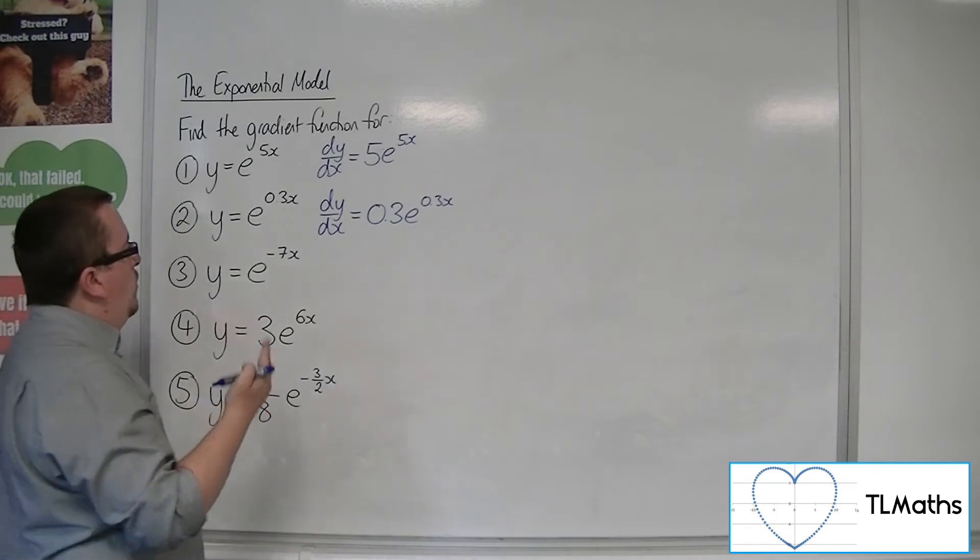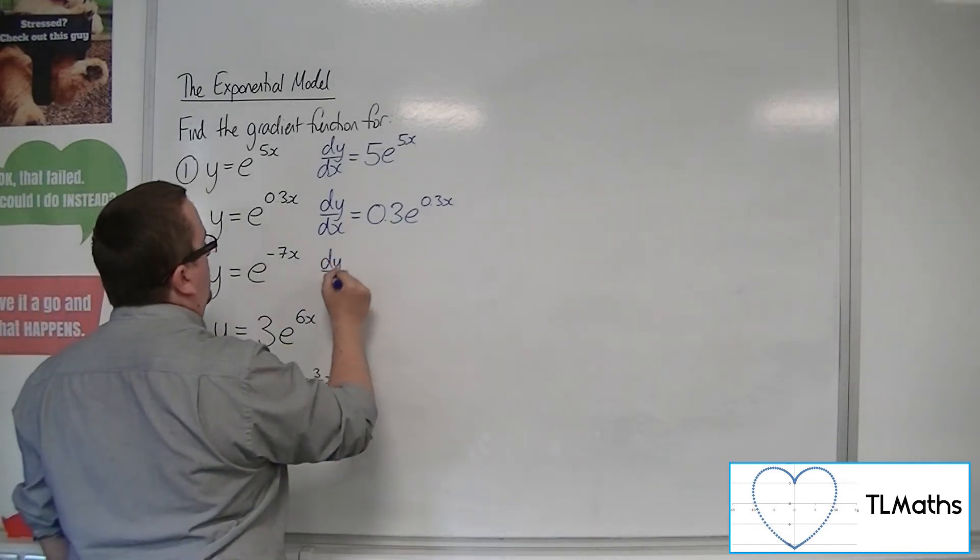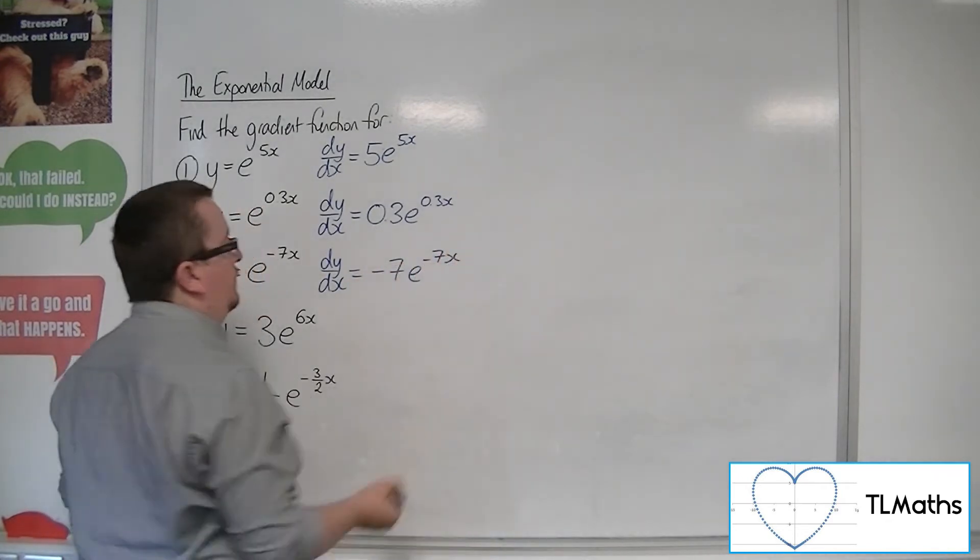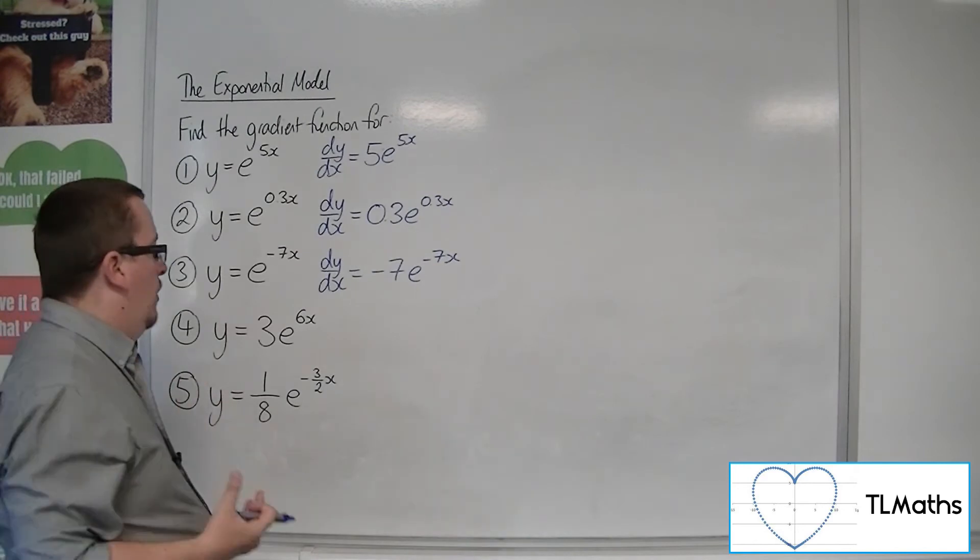Number 3, y equals e to the minus 7x, so dy by dx will be minus 7e to the minus 7x. Okay, quite straightforward.